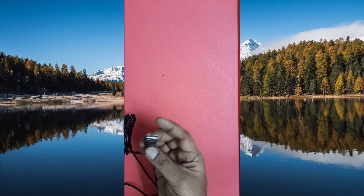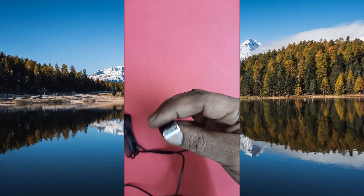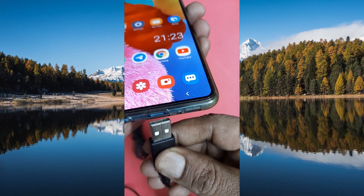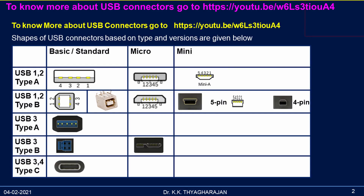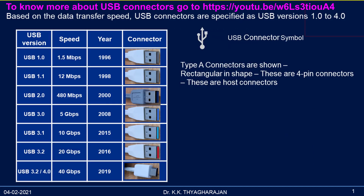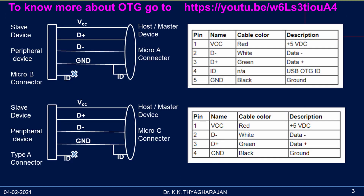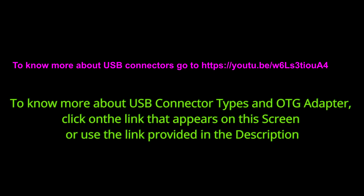You can connect the mouse directly to your phone, but the mouse will have a standard Type-A USB connector while the phone will have only a USB Type-C connector. In such cases, choose a USB OTG adapter that has a USB Type-C host connector at one end and a standard Type-A USB connector on the other end. Instead of using an adapter connector, you can also use a USB OTG adapter cable, but it will be a little bit costlier. The adapter connector costs around 100 Indian rupees, while the USB OTG cable costs around 300 to 400 Indian rupees depending on cable length.